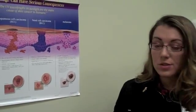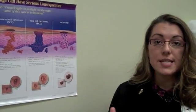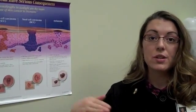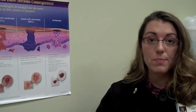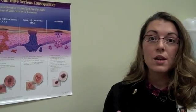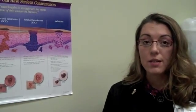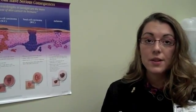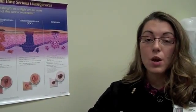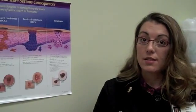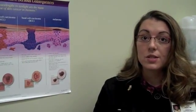Those signs are what we call the ABCD signs: Asymmetry, Border irregularity, Color variation, and Diameter greater than a pencil eraser or 6 millimeters. The last sign of melanoma is Evolving over time — this can mean a tiny little spot just the size of a pin head that starts to change, grow, turn different colors, or bleed or itch all the time. If you have anything like that on your skin, come in and see us right away at Morrisville Dermatology Center.